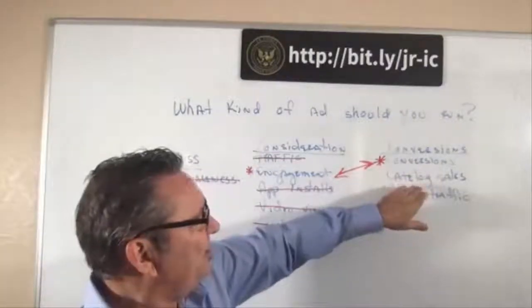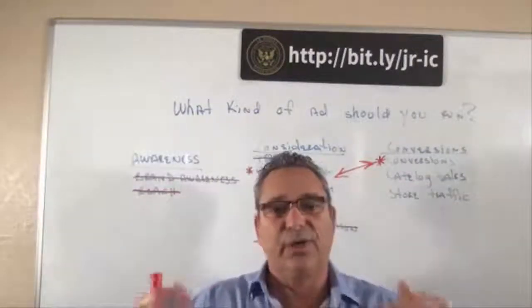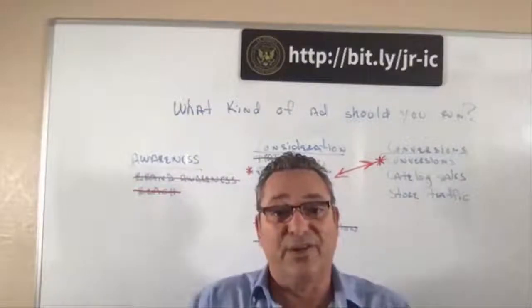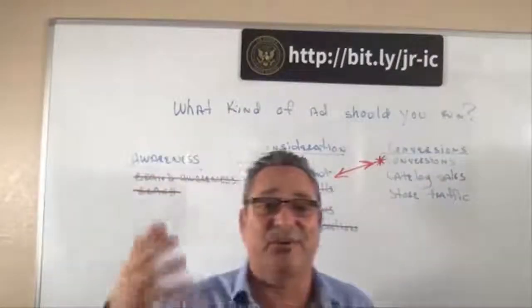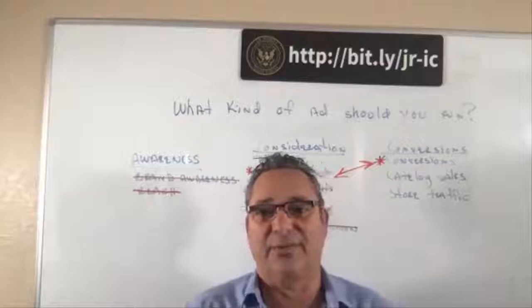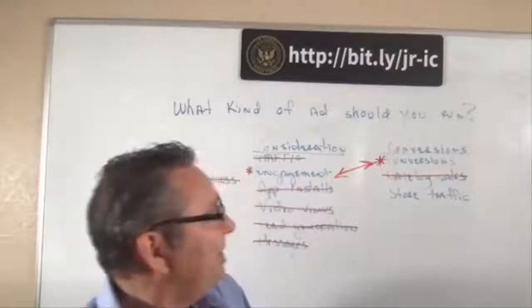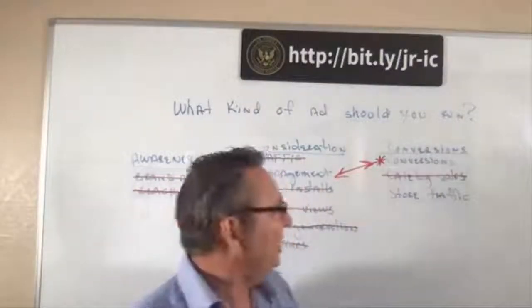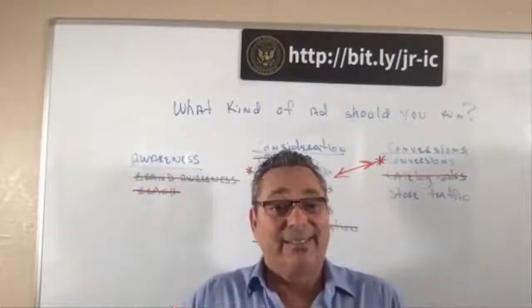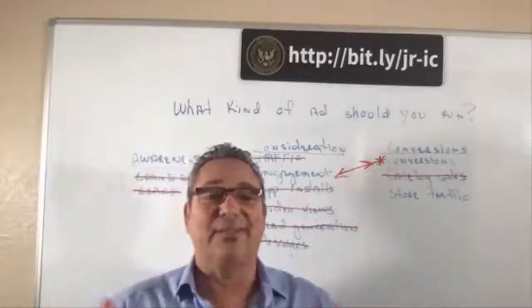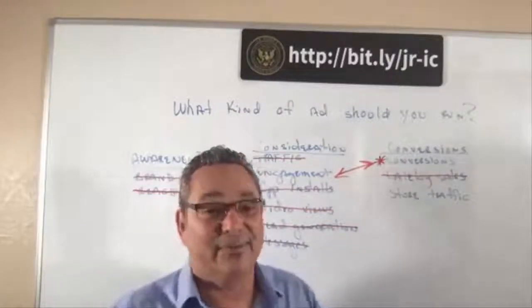The next option is Catalog Sales — you hook your store into Facebook and send people to your store for sales. We don't use this because we like to focus on one single product and then upsell to other products. And the last option is Store Traffic — Facebook sends people to your store, but they're just people who like to browse around. Could some of them be buyers? Maybe, but not enough to make it profitable.